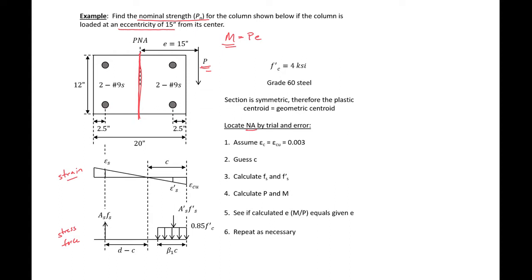We'll start by assuming that our extreme compression fiber is equal to 0.003, which is our ACI assumption. We'll make a guess for c — how deep our neutral axis is. We'll calculate the stress in both our tension and compression steel. We'll calculate our associated P and M, then calculate eccentricity e = M/P and see if it equals the given 15 inches, repeating as many times as needed.